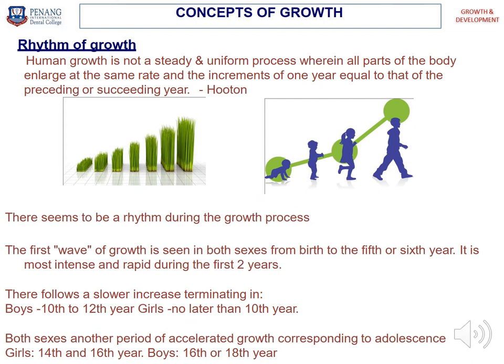Now, the rhythm of growth. Human growth is not a steady and uniform process where all parts of the body enlarge at the same rate. There seems to be a rhythm during the growth process. The first wave of growth is seen in both sexes from birth to the fifth or sixth year, most intense and rapid during the first two years. It then follows a slower increase, terminating in boys at 10 to 12 years old, and in girls no later than 10 years.